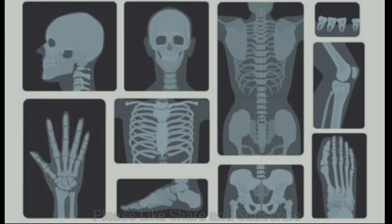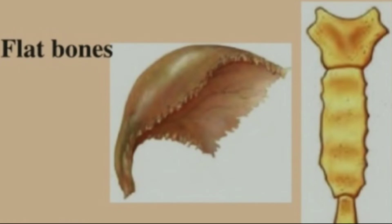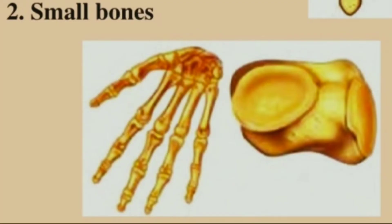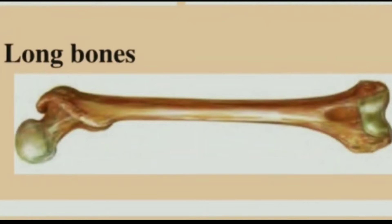Types of bones: Bones of our body are classified into four types. Flat bones — example, shoulder. Small bones — example, fingers and toes. Irregular bones — example, vertebra or hip bone. Long bones — example, thigh.